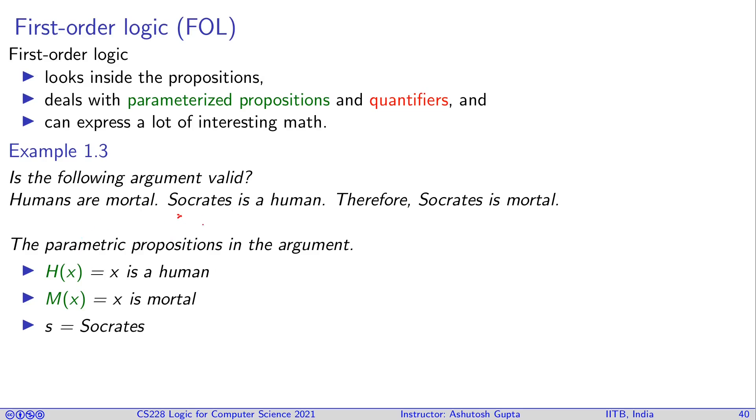So we have this proposition, something is human. Socrates is a human. So we can say that H of x, x is a human, is a parameterized proposition, and you can put the value of x, then it has a truth value. If you put a chair here it will not be true. If some human you put as a parameter, let's say Socrates, it will be true.